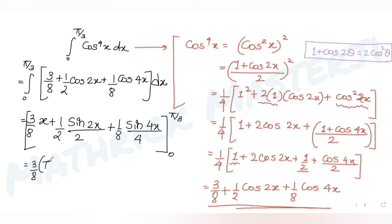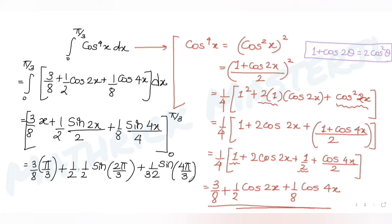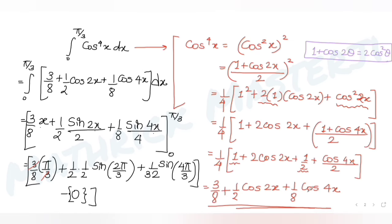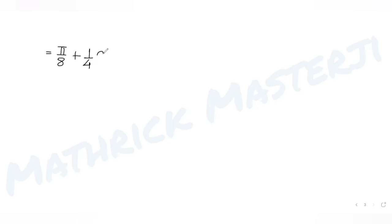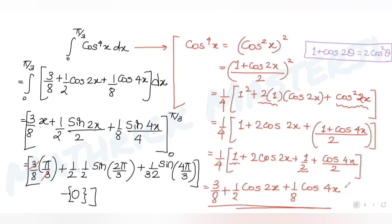Applying the upper limit π/3: we get (3/8)(π/3) + (1/2)(1/2)sin(2π/3) + (1/32)sin(4π/3). Applying the lower limit 0: sin(0) = 0 for all terms, so the lower limit contribution is entirely zero. Simplifying 3/8 × π/3 cancels the 3s, leaving π/8.